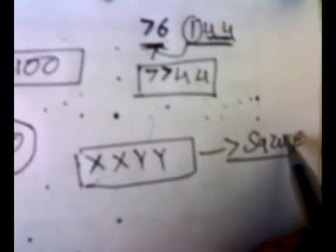By the way, in a CAT exam question paper there was a question: find the number of the form XXYY which is also a perfect square. Our answer here — 7744 — is the only number of the form XXYY that is also a perfect square.